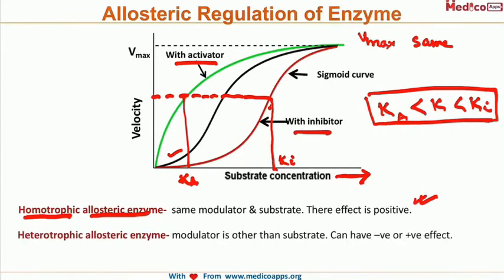Then we have heterotropic Allosteric enzymes. Here, the modulator is different from the substrate — they are two different molecules — and in such cases the effect can be positive or negative, meaning we can have either an activator or an inhibitor.